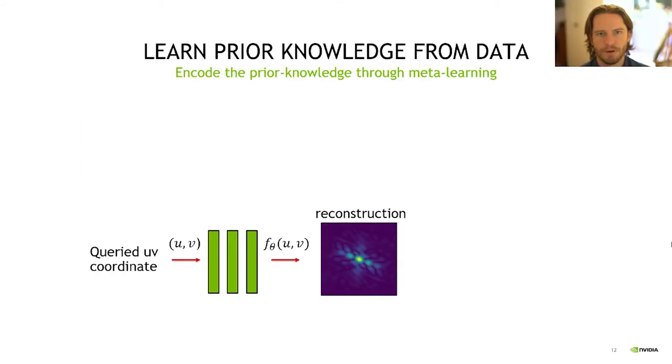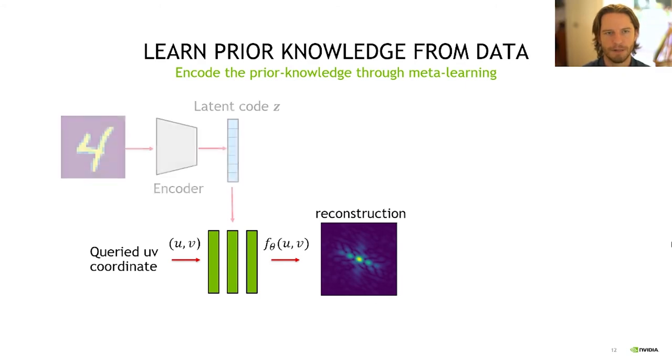The setup just described allows us to learn the weights of a neural network that allow an accurate mapping between the UV coordinates and the complex visibilities in the spectral domain. However, the weights of this network will be fit to a particular set of observations and cannot generalize. Therefore, we need to introduce a meta-learning procedure that, given a large amount of observations, we can learn the appropriate data priors.